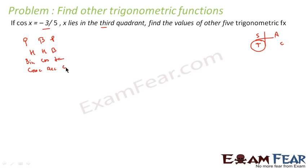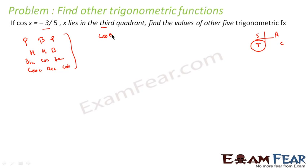So we have to write these formulas. Before solving any question, we write these things. If you write these two, you can solve the question. So we see cos theta is equal to b by h. Now we will take just the values — we will not take the signs. So it is equal to 3 by 5.